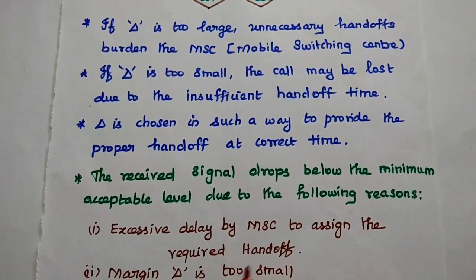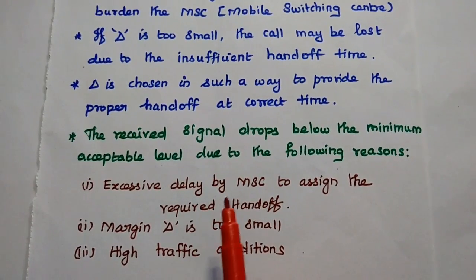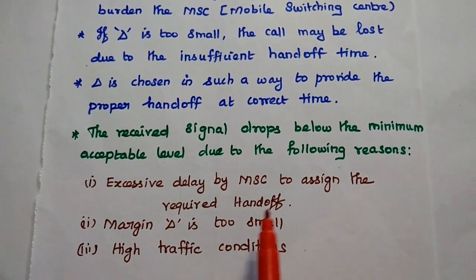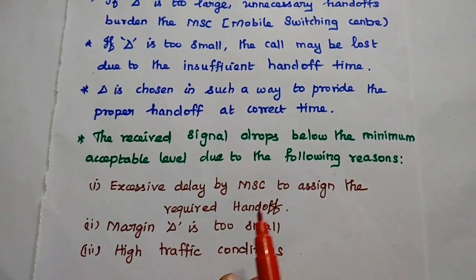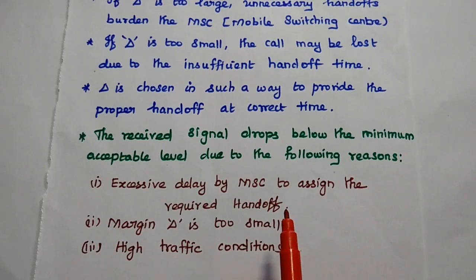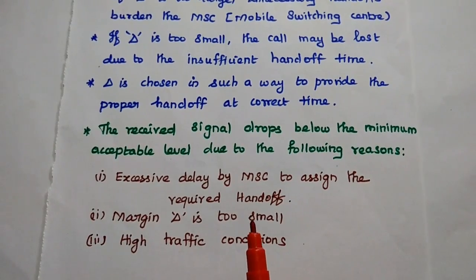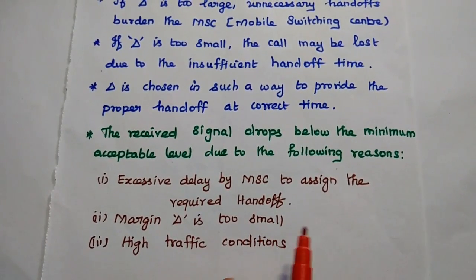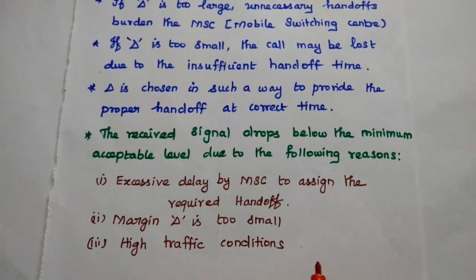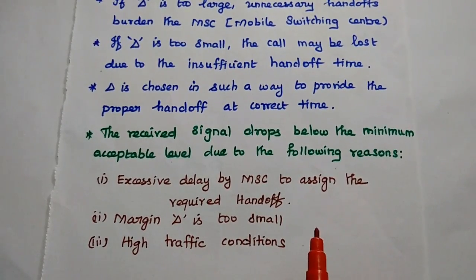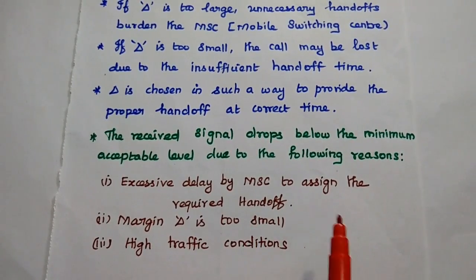The received signal can drop below the minimum acceptable level due to the following reasons: first, excessive delay by the mobile switching center to assign the required handoff — sometimes the MSC itself takes more time to assign the new channel; second, the marginal value is too small, resulting in insufficient handoff time; and third, high traffic conditions in the new cell, where all channels are occupied and the system cannot allocate a channel to the newly incoming user.